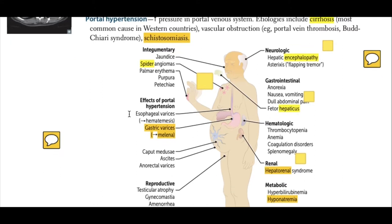In portal hypertension, increased blood in the portal vein puts pressure back on the mesenteric arteries. This leads to esophageal varices and bleeding from the mouth, known as hematemesis, as well as gastric varices due to trauma and injuries in the GI tract. This results in melena.